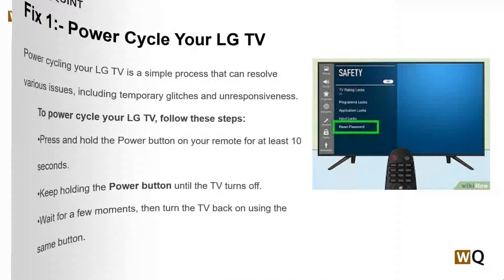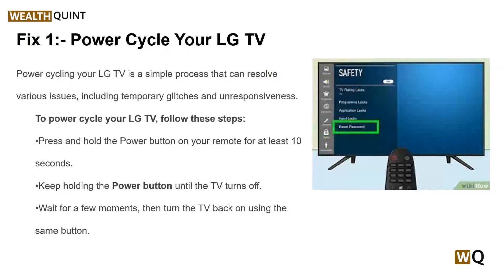Solution one is to power cycle your LG TV. Power cycling your LG TV is a simple process that can resolve various issues including temporary glitches and unresponsiveness. To power cycle your LG TV, follow these steps: first, press and hold the power button on your remote for at least 10 seconds. Keep holding until the TV turns off, wait a few moments, then turn the TV back on using the same button.